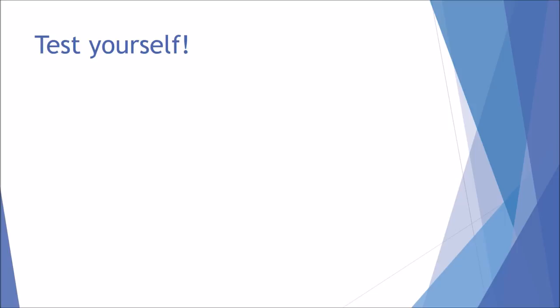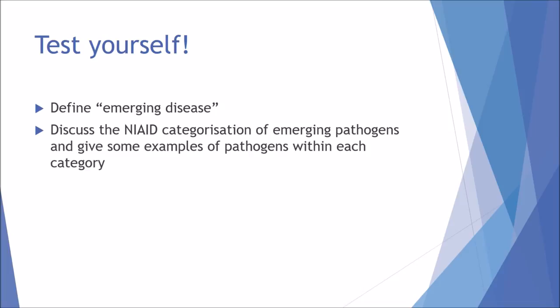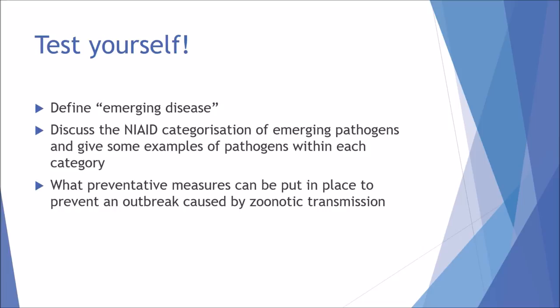Now for the test yourself section. Questions include: define emerging disease; discuss the NIAID categorisation of emerging pathogens and give examples within each category; and what preventative measures can be put in place to prevent an outbreak caused by zoonotic transmission? This was my microbiology video on emerging diseases. In the next video I'll discuss the recent Ebola outbreak and the mechanisms behind how it became an emerging disease. Thanks for watching — leave a thumbs up if you enjoyed it, and post any questions in the comments below.